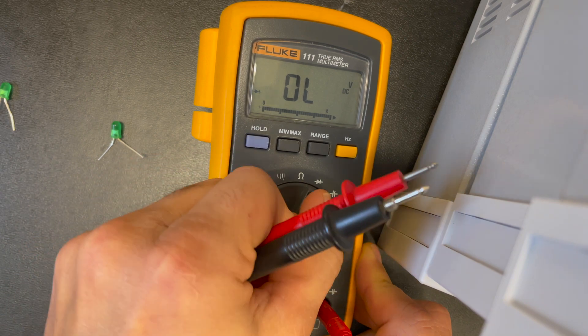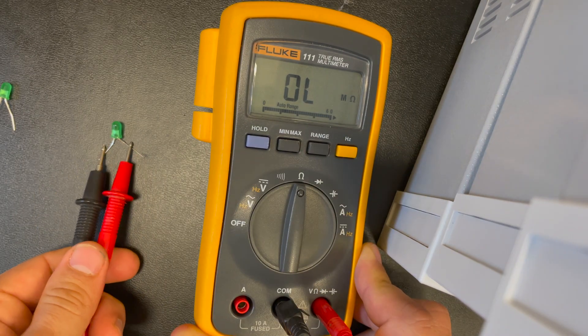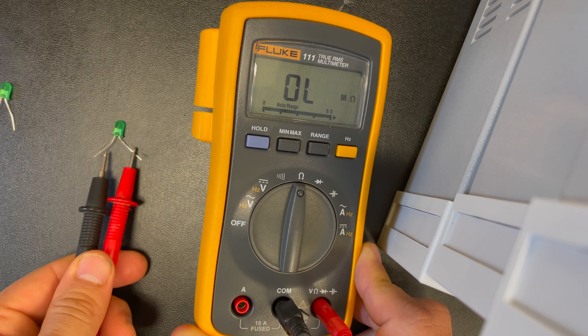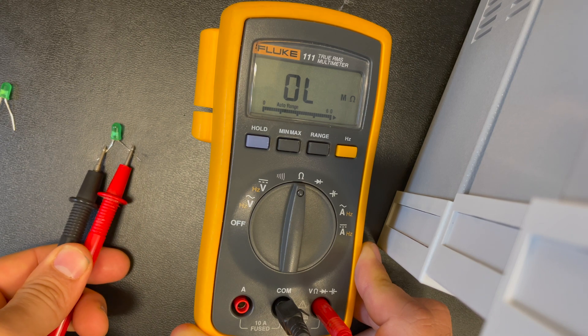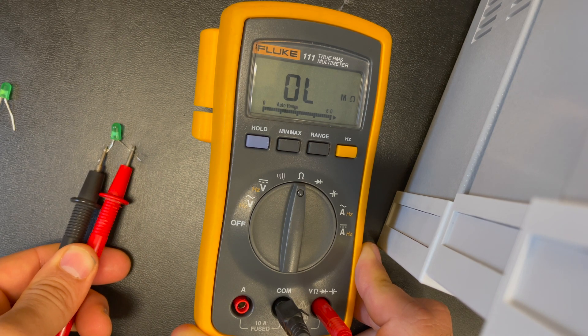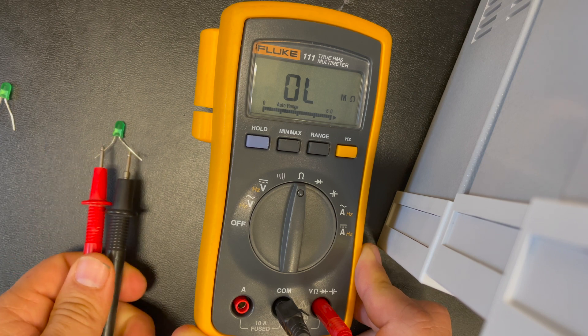If I were to switch this meter over to resistance mode I'm going to measure open line in both situations as well. One thing you notice is in either situation in either diode test mode or in resistance test mode the LED doesn't light up at all.